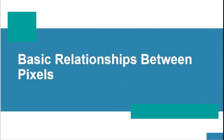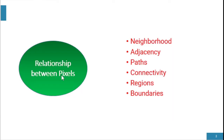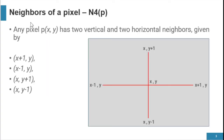Hey everyone, in this lecture we discuss basic relationships between pixels. The topics include neighborhood, adjacency, path, connectivity, regions, and boundaries — they are all basic relationships between pixels. First, we discuss the neighborhood relationship.